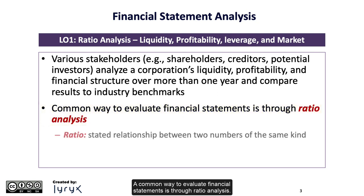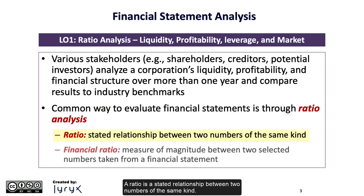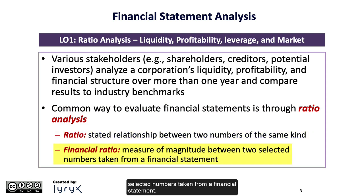A ratio is a stated relationship between two numbers of the same kind. A financial ratio is a measure of magnitude between two selected numbers taken from a financial statement.